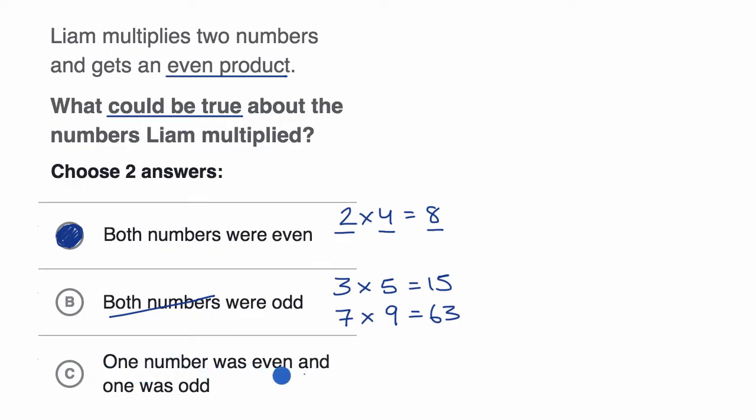One number was even and one number was odd. Well let's think about what happens when you multiply an even times an odd. If I multiply two times three, that's equal to six. So you have an even, I'll just put an E there, times an odd is equal to an even.